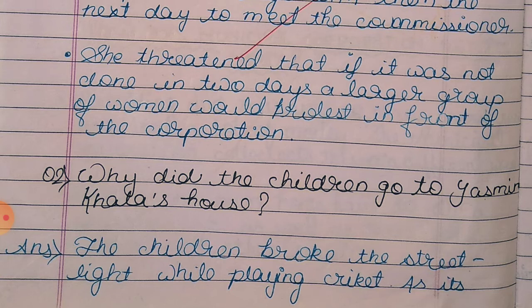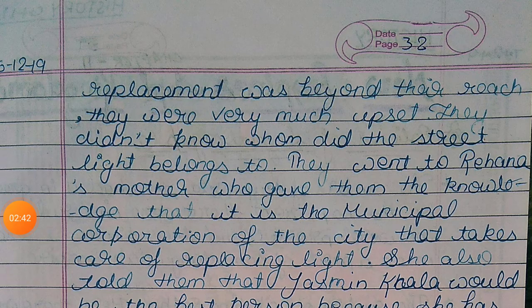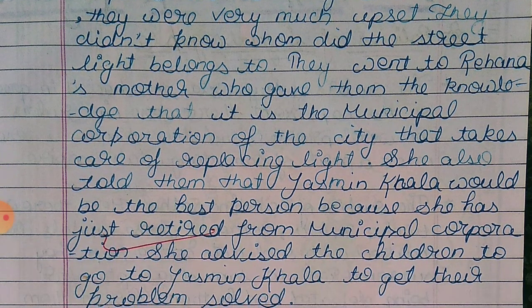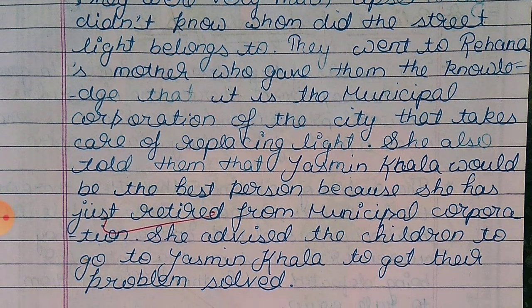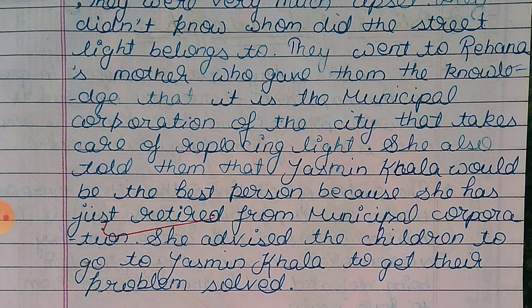Why did the children go to Yasmin Khala's house? The children had broken a streetlight while playing cricket, and its replacement was beyond their reach. They were very upset and did not know whom the streetlight belonged to. They went to Rihana's mother, who told them that it is the Municipal Corporation that takes care of replacing lights.